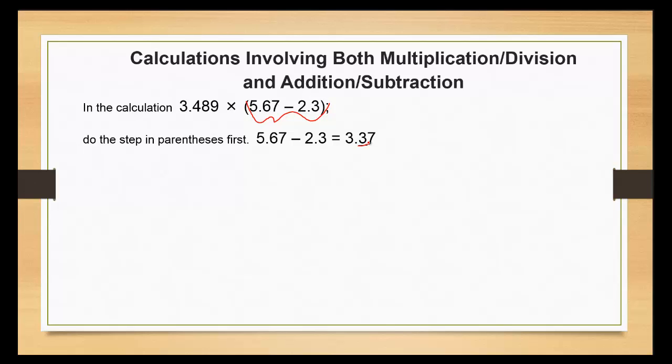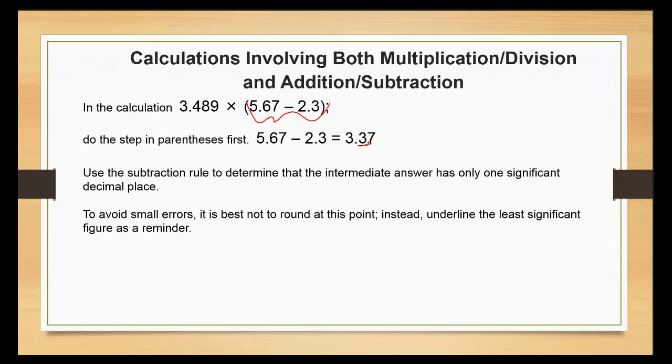Use the subtraction rule to determine that the intermediate answer has only one significant decimal place, which is that point three. To avoid small errors, it is best not to round at this point. Instead, underline the least significant figure as a reminder.